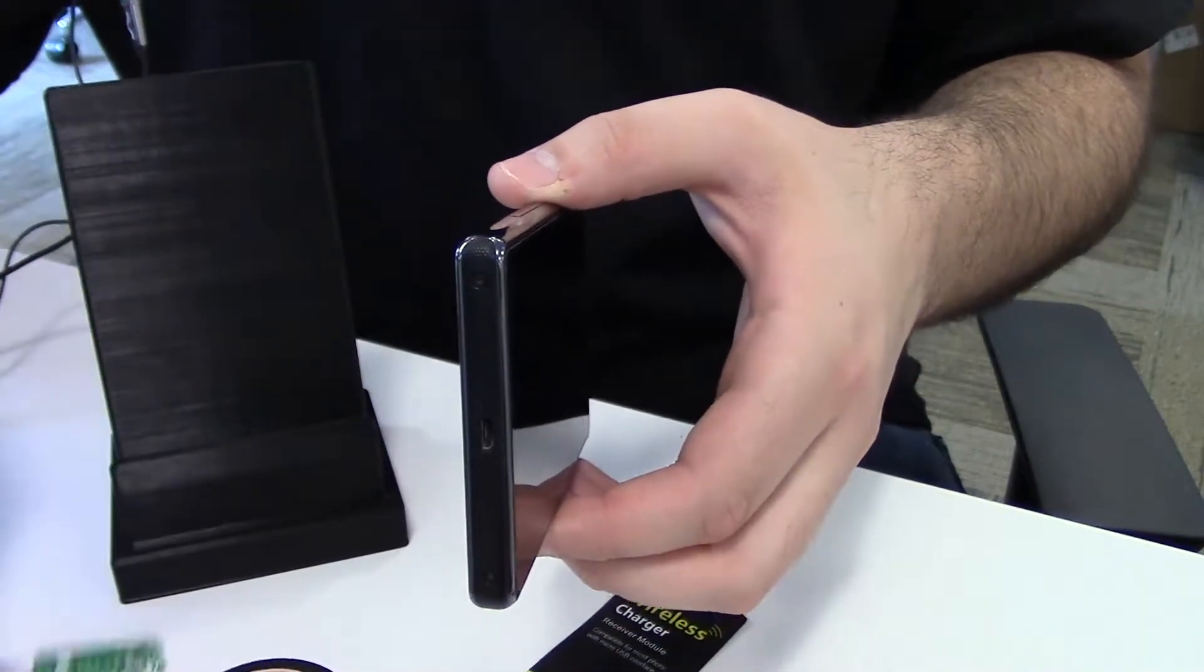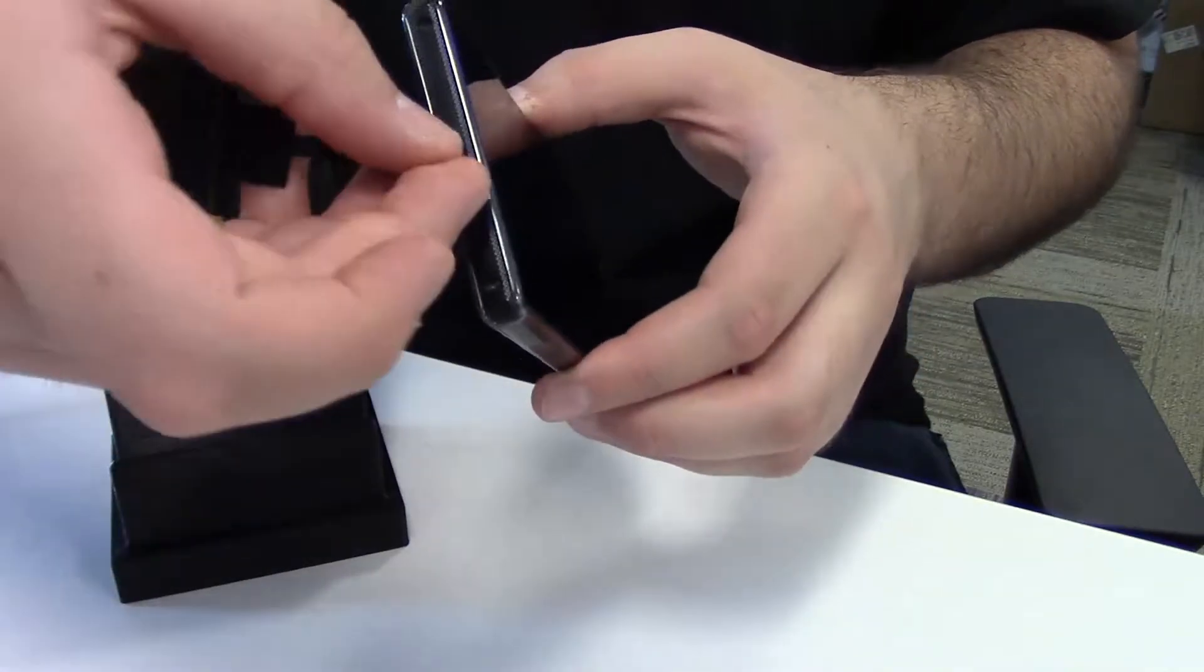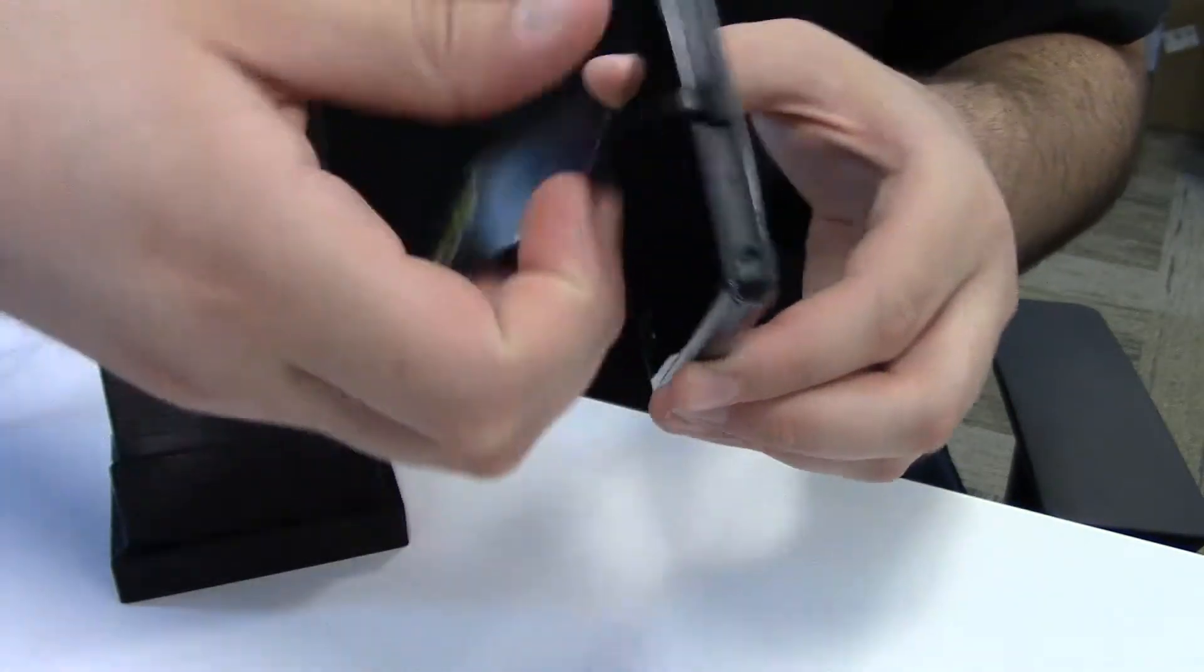Unfortunately, my phone is a couple years old and it doesn't support wireless charging out of the box. To add that functionality, I had to get this receiver, which would allow most phones to charge wirelessly through micro-USB.